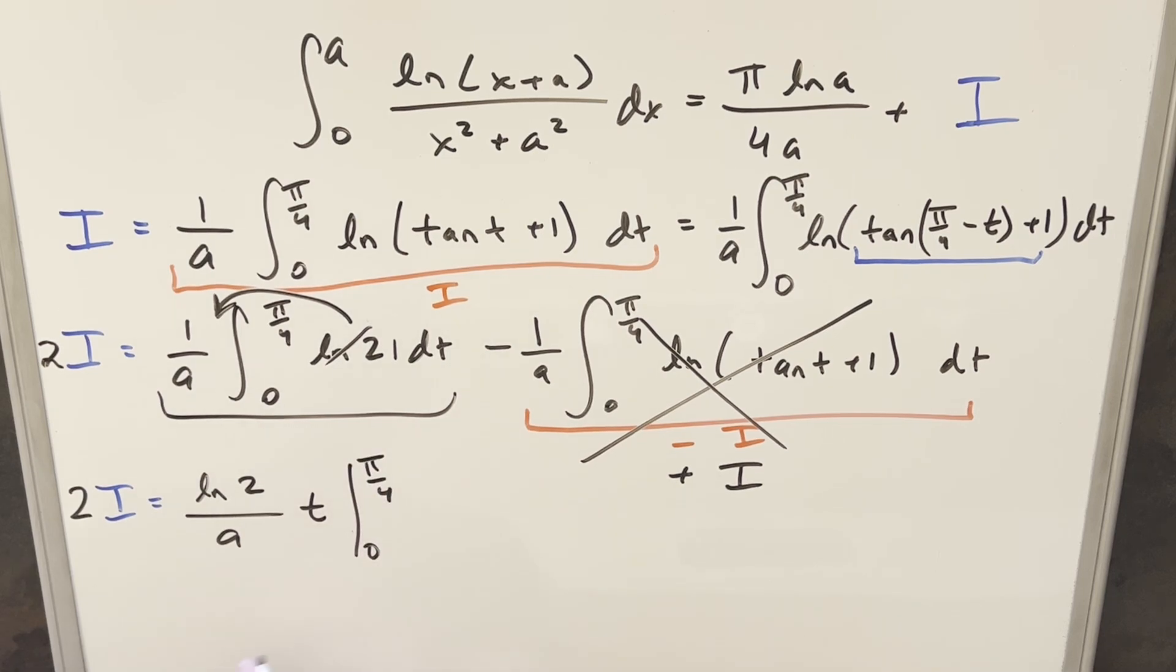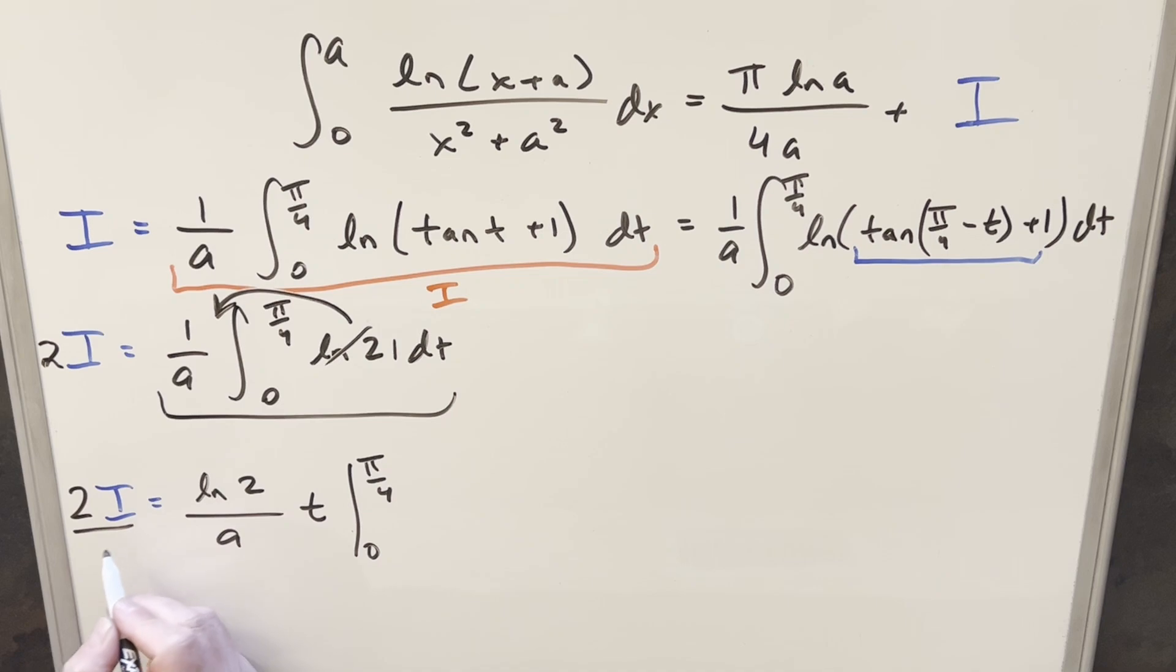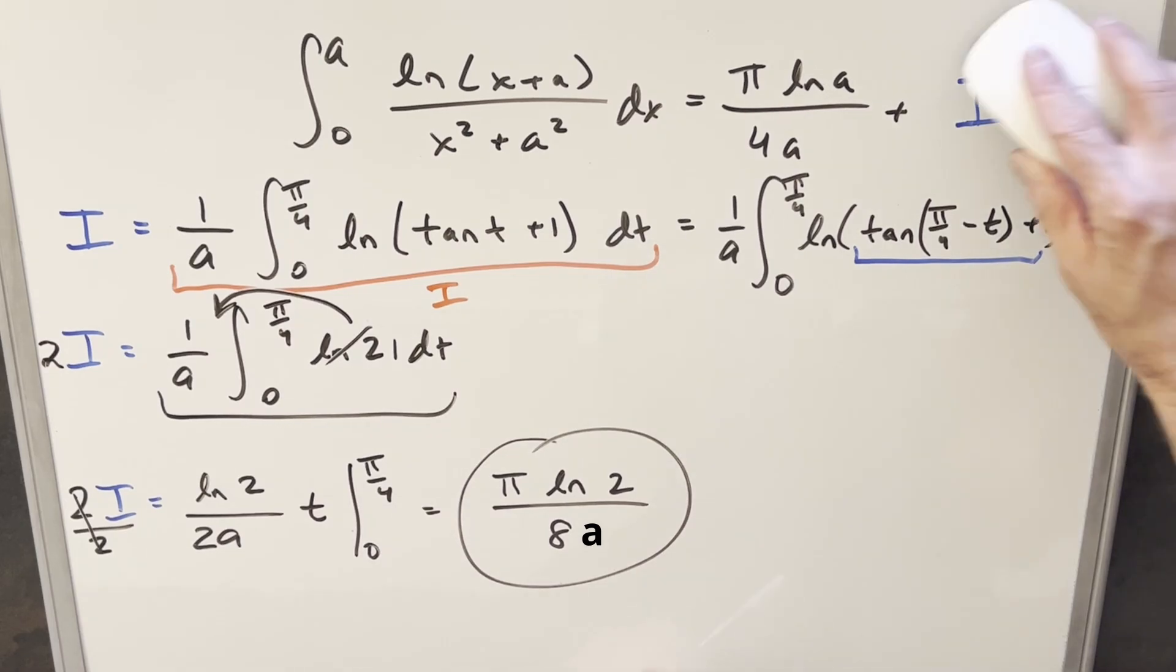We need to evaluate that from 0 to pi over 4. And I think before I evaluate, let's just get rid of this 2 to isolate what we want, our I. Divide by 2. On the other side, we have a 2A there. We plug 0 in, everything's 0. So we just need to plug in pi over 4. And so for this piece, we're going to end up with pi natural log 2, 4 times 2, just 8 in the denominator. And now we have our value here. This is going to be our value over here for I.